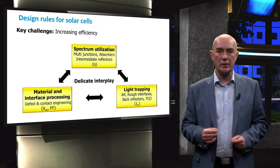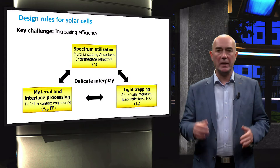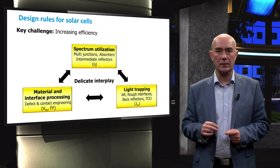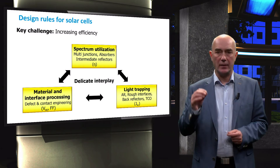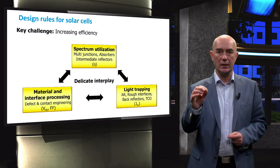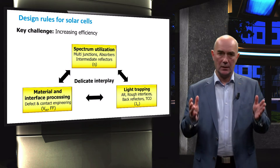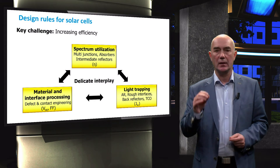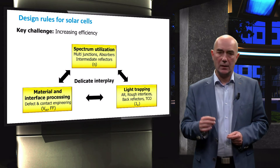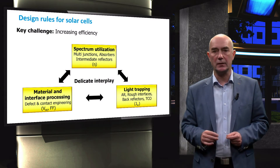This diagram shows the design rules for increasing the efficiency of solar cells. Better spectral utilization is achieved by the choice of absorber materials that build a solar cell. As discussed before, the number of photons that are absorbed by a solar cell and consequently the photocurrent are constrained by the bandgap of the absorber material. The quality of materials and interfaces determine the bandgap utilization of absorbers and the fill factor. As we learned from the previous video, the open circuit voltage is directly related to the bandgap utilization.